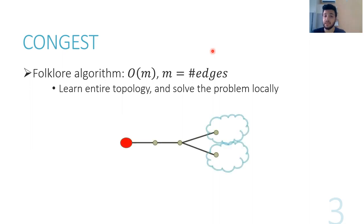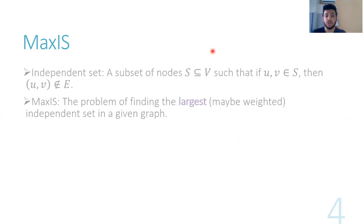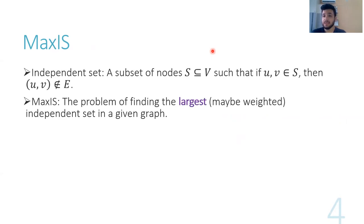Today we are going to focus on the MAX IS problem. In a given graph, we call a subset of the nodes S an independent set if for each pair of nodes from the set, they are not connected by an edge. In the MAX IS problem, we are tasked with finding the largest independent set, perhaps by weight, if the vertices are equipped with a weight function.